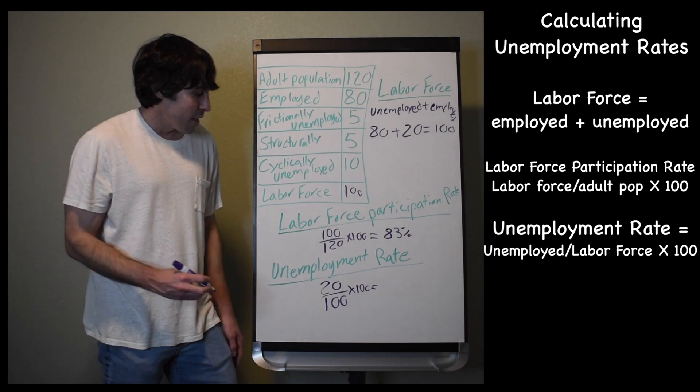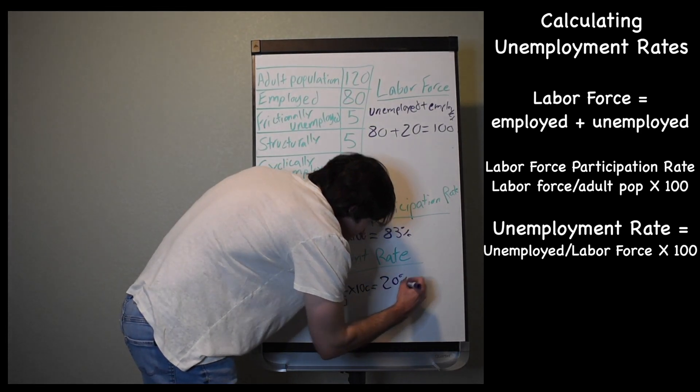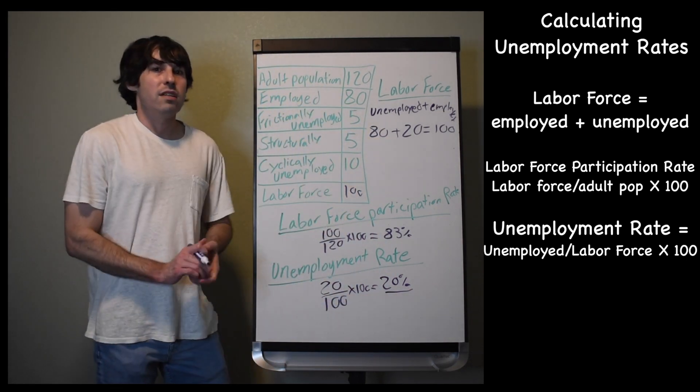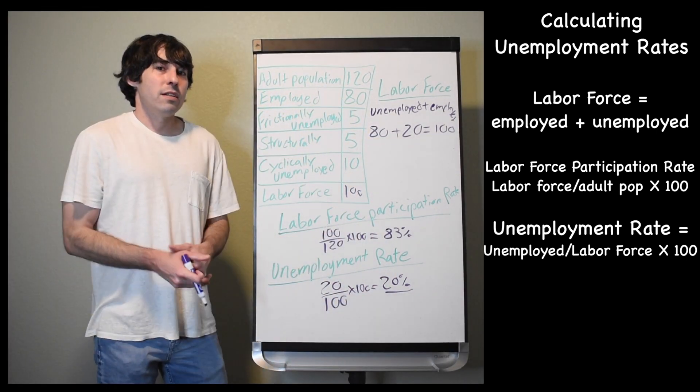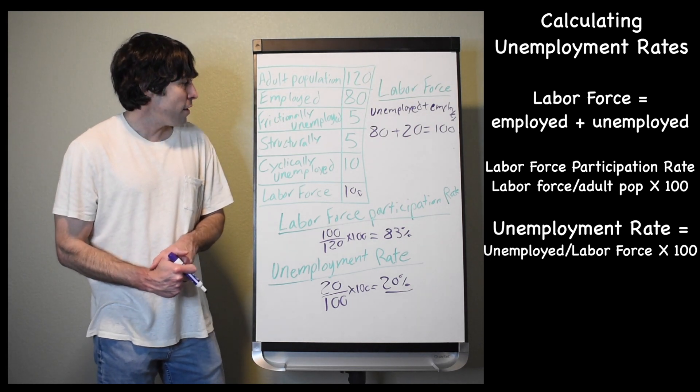20 divided by 100 times 100 is going to come out to 20%. So there is a 20% unemployment rate in this country. In order to understand whether or not that's good or bad, we first have to know what our natural rate of unemployment is.